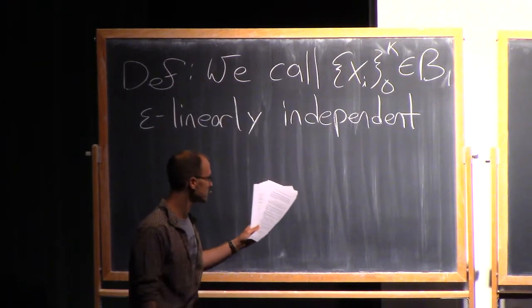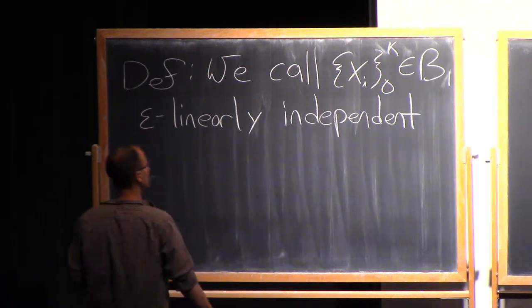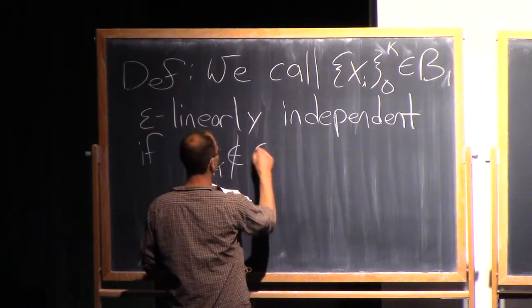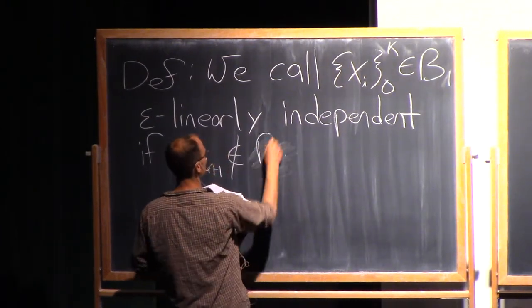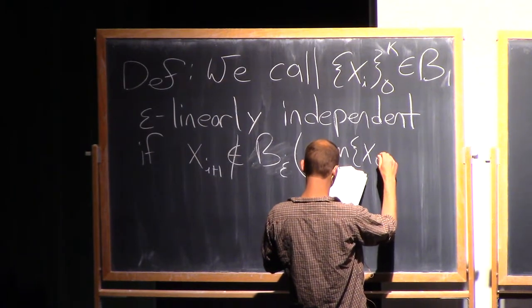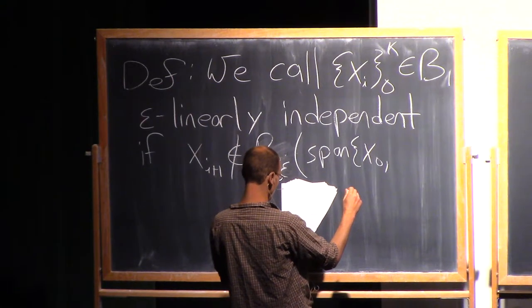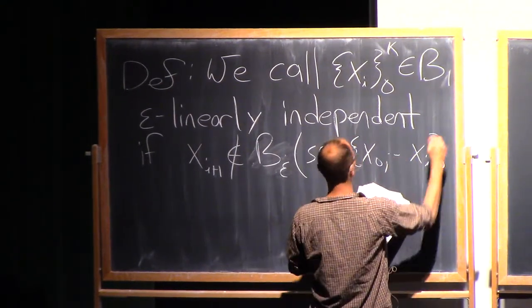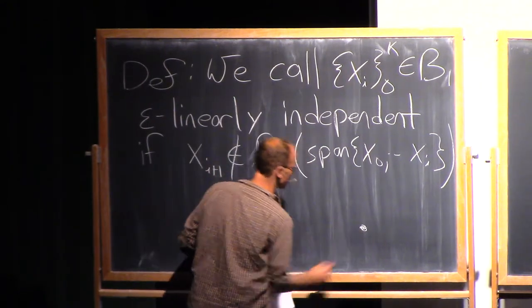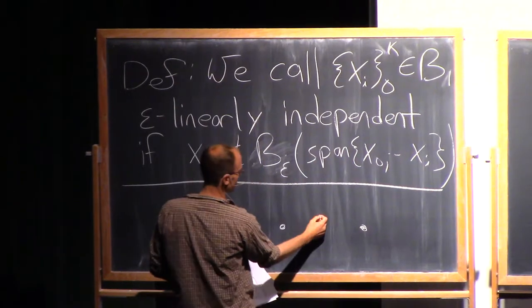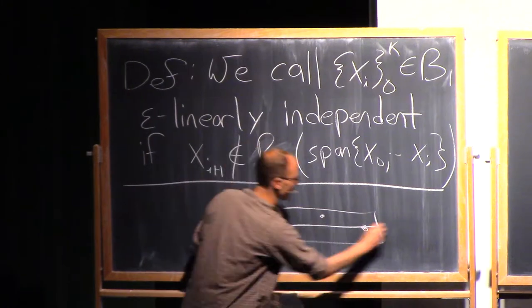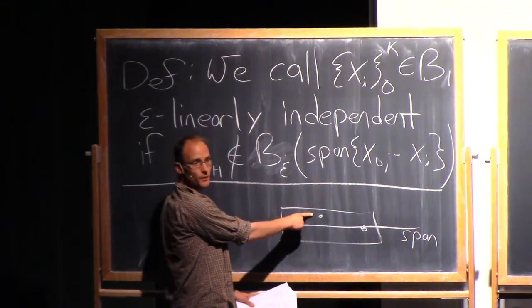So definition, I'll call this epsilon linear independence. We call a set, xi, k plus 1 points inside the ball of radius 1. We say that they are epsilon linearly independent if what? Well, not only can none of these points be in the span of the other points, but none of these points can be within epsilon of the other points. So if xi plus 1, say, is not an element of the tube of radius epsilon around the span of the first points.